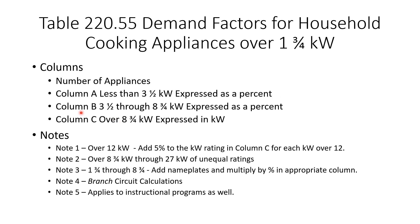Column B covers appliances between three and a half and eight and three-quarters kilowatts, also expressed as a percent. Column C covers anything over eight and three-quarters kilowatts, and it's expressed in kilowatts — not percent — which is what can be confusing.